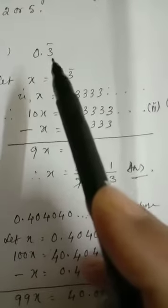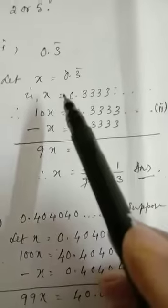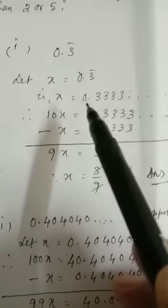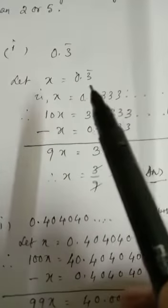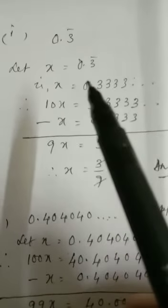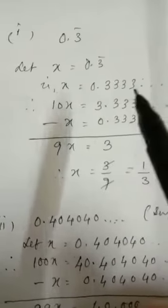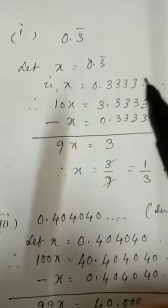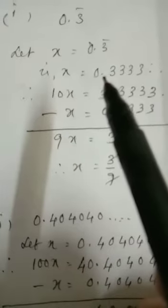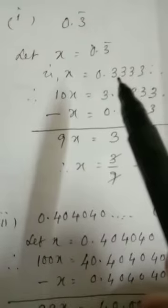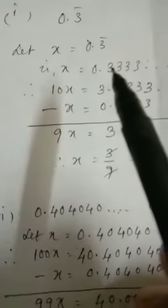So let us take first question number 1: 0.3 recurring. So 0.3 bar, that you can write, is equal to 0.333, and it will continue. So let us take x is equal to 0.3333. Now, since here only one number is repeating, therefore you have to bring the decimal after one place, that means you have to bring the decimal after 3.